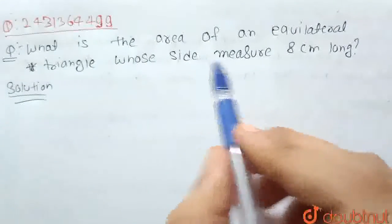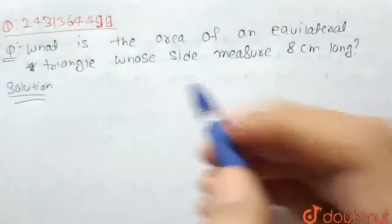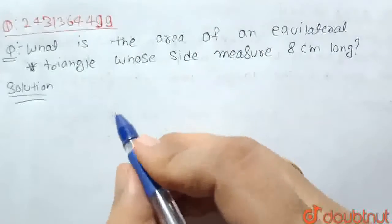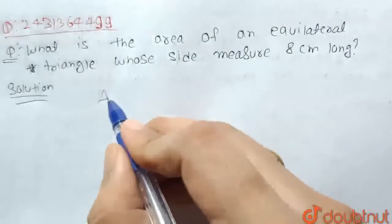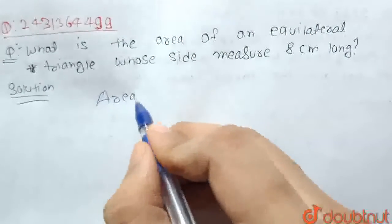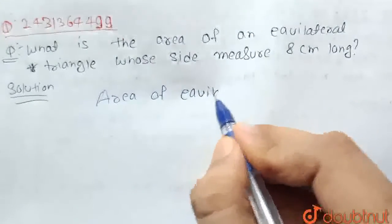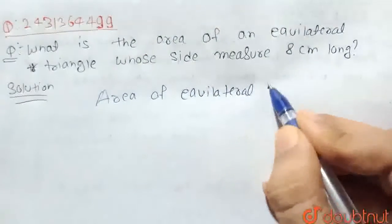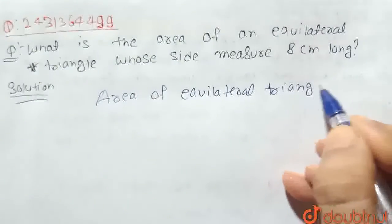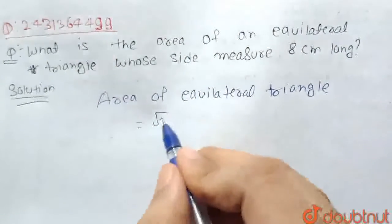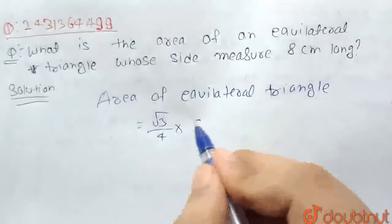We have given a side of equilateral triangle that is 8 cm and we know the formula of area of equilateral triangle that is equal to square root of 3 upon 4 multiply side square.